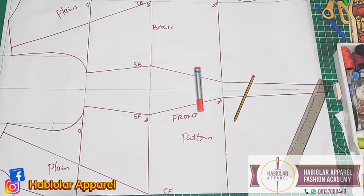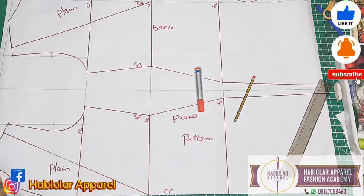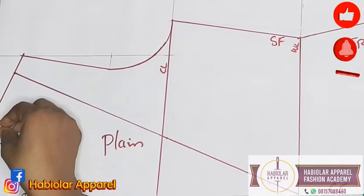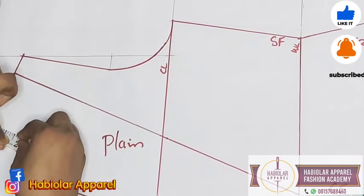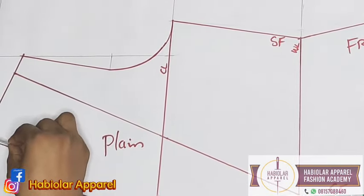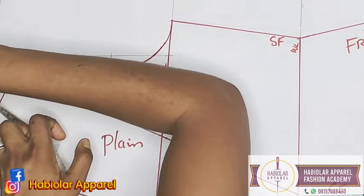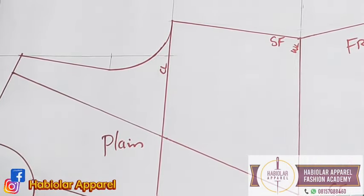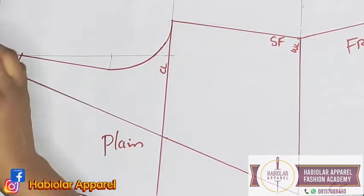For a shirt collar you need two types of collar: you need a collar stand and the main collar. What I want to do is to measure my neckline for the front. I'm having three point seven five, I can even make it four inches. So that's for the front, four inches.